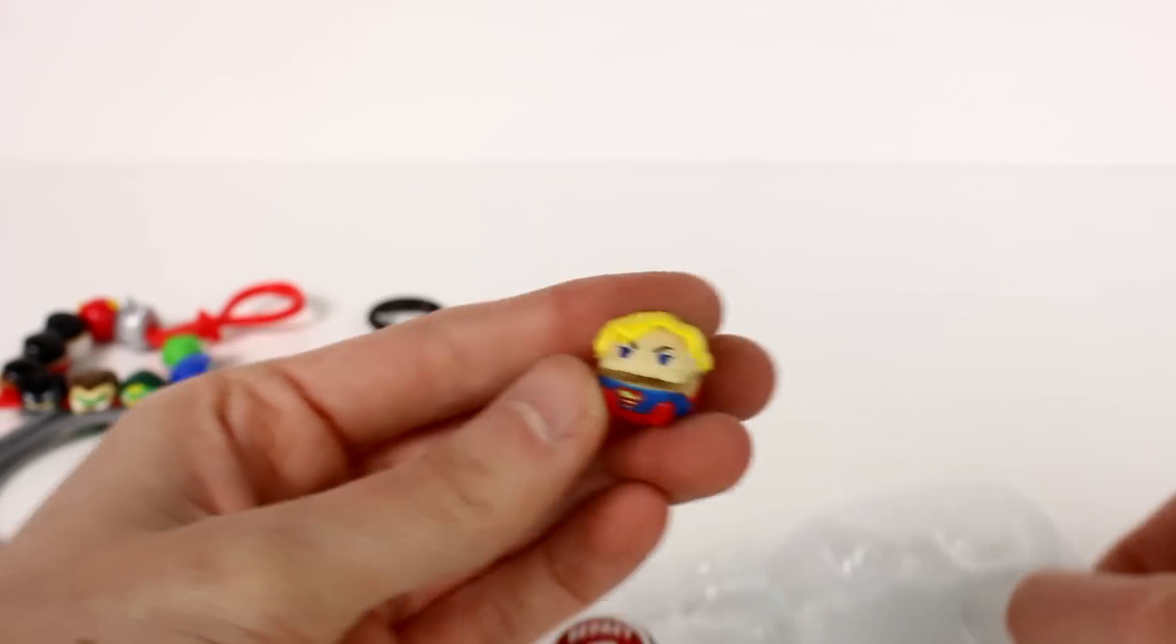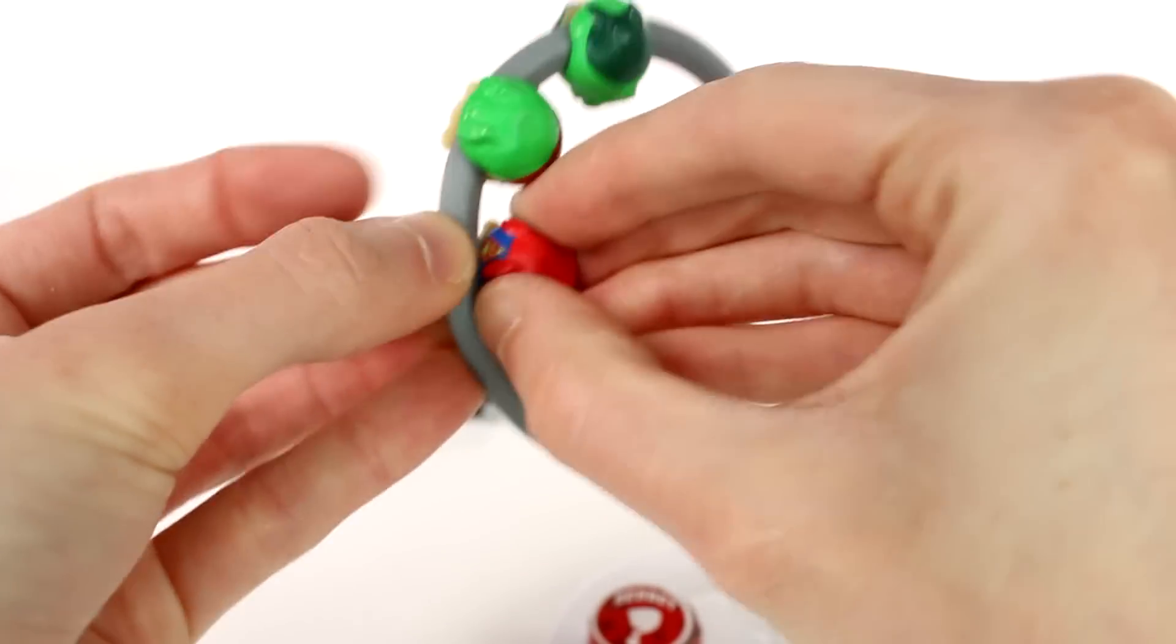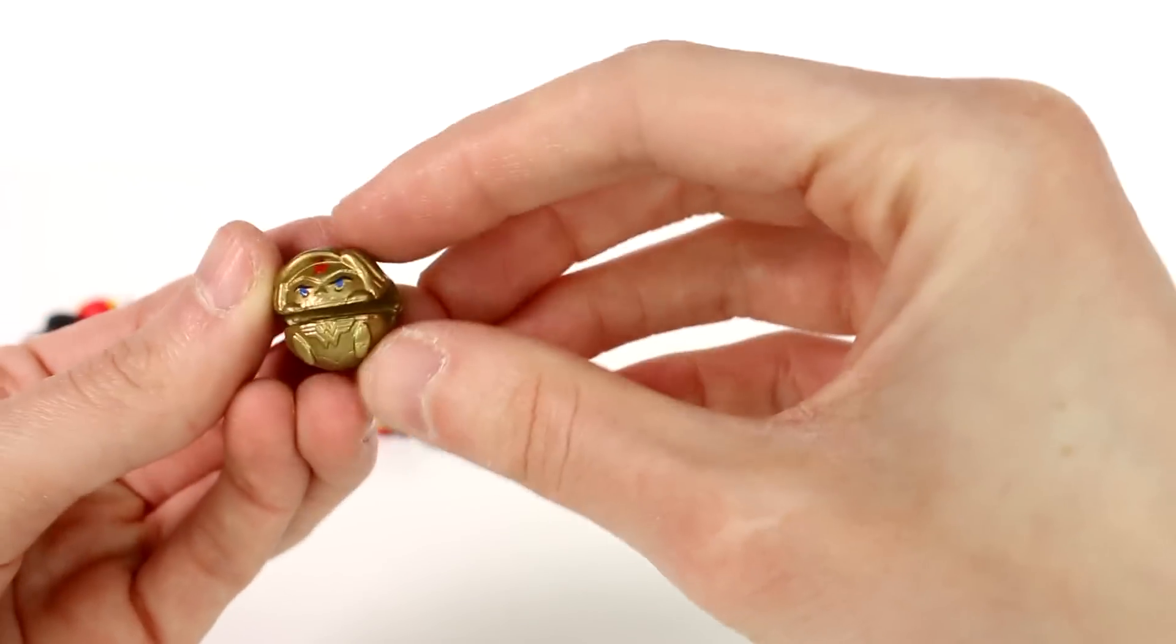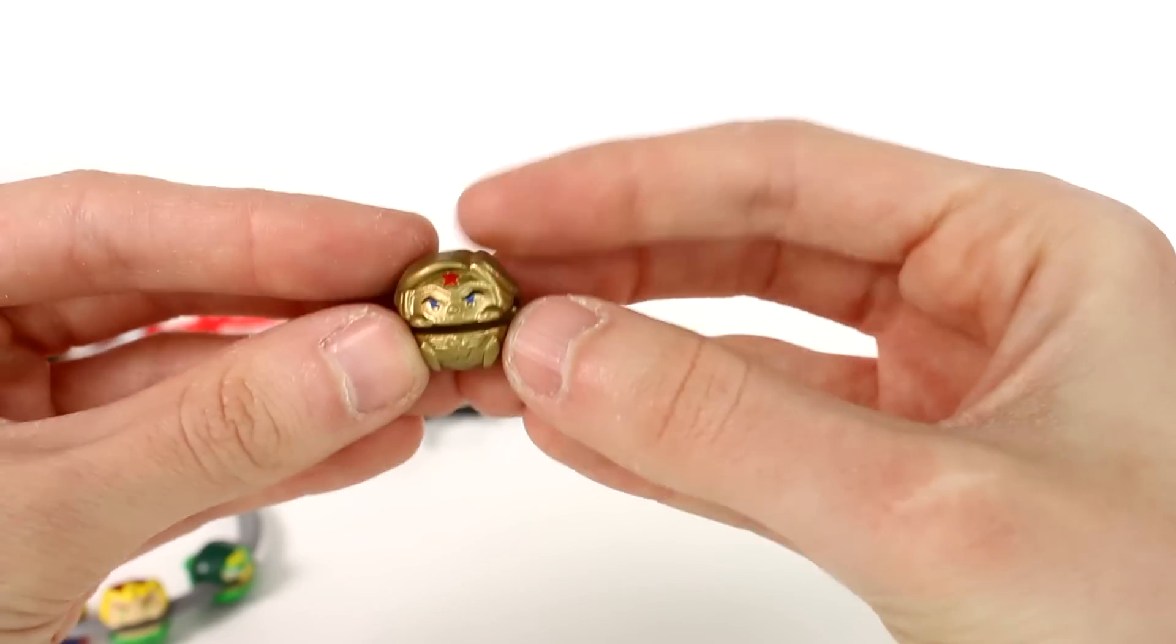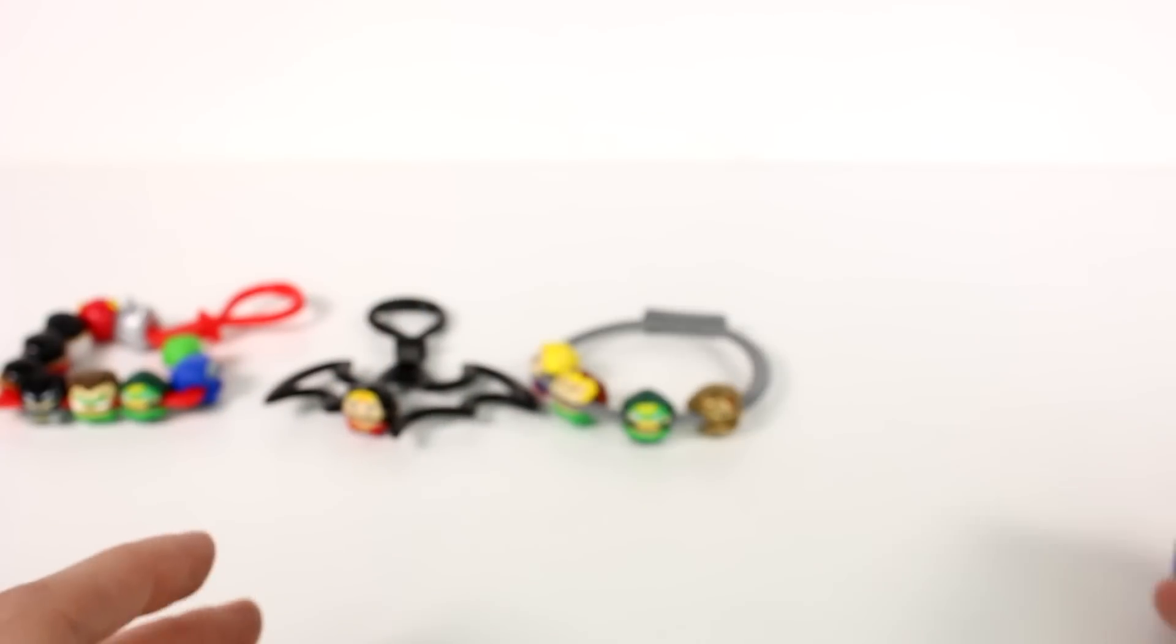Two secrets. First one is Supergirl. Woohoo. Awesome. Or Superwoman. And then we have, ooh, someone gold. Wait, is that Wonder Woman? Yeah, that's a golden Wonder Woman. Awesome. So we got a silver Batman, a golden Wonder Woman. I don't know how we're going to get any better than this. Let's see.